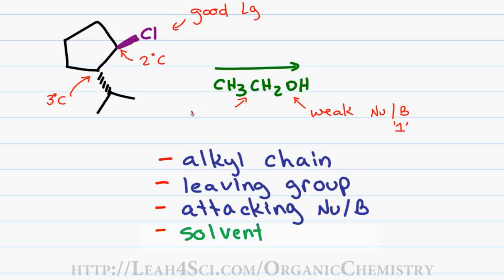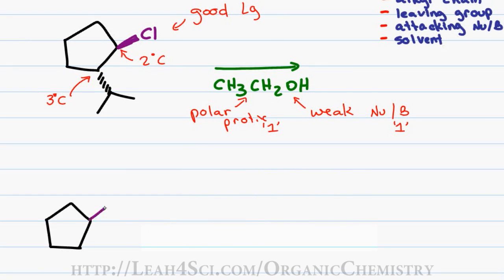And finally ethanol as a solvent is polar protic which would stabilize all the charged intermediates in this reaction once again pointing towards a one type reaction justifying the fact that in this case we're looking at an SN1 rather than an SN2 reaction.